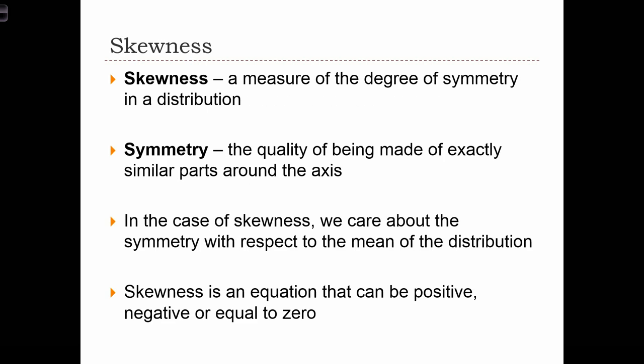Skewness is a measure of the degree of symmetry in a distribution, where symmetry is the quality of being made of exactly similar parts around the axis. In the case of skewness, we care about the symmetry with respect to the mean of the distribution. So skewness is an equation that can be positive, negative, or zero, depending on whether or not the lack of symmetry occurs due to more events on the right side, the left side, or if there's no lack of symmetry at all.